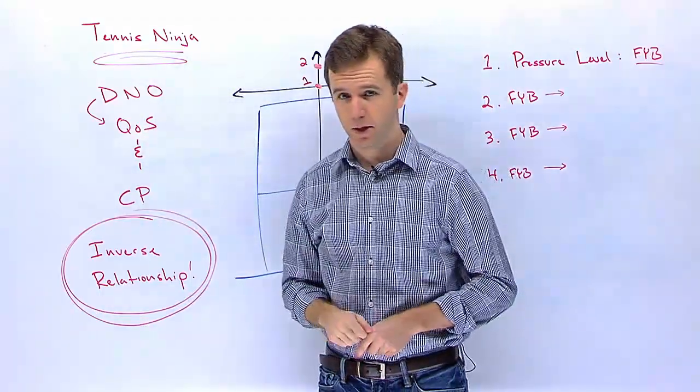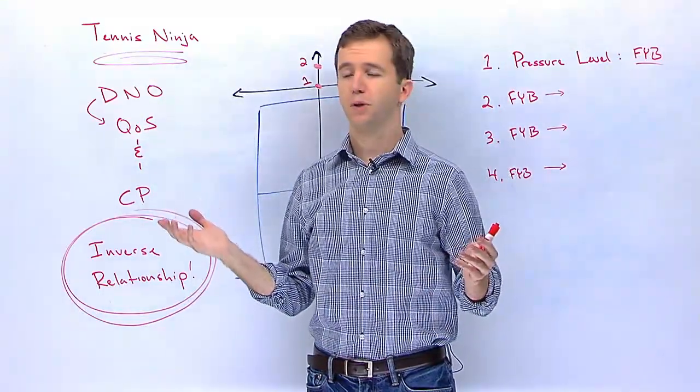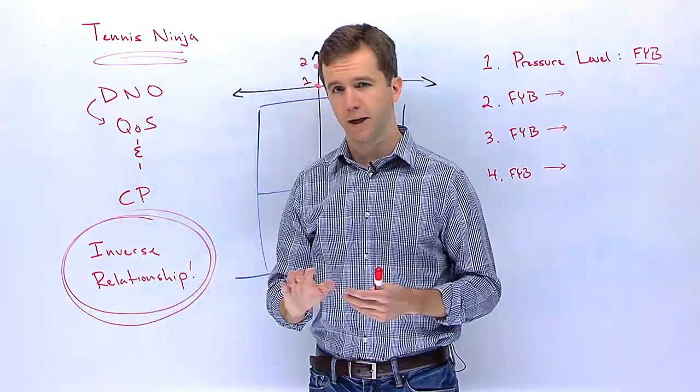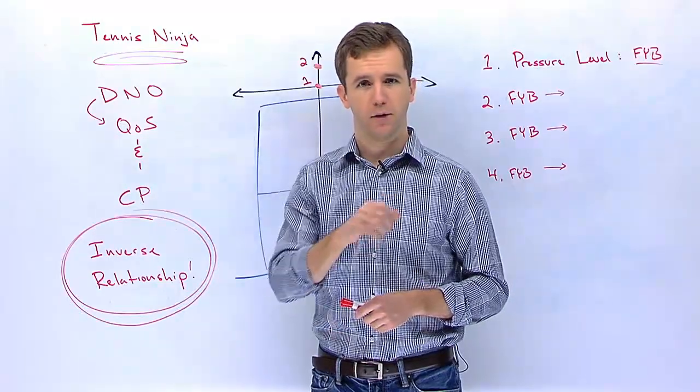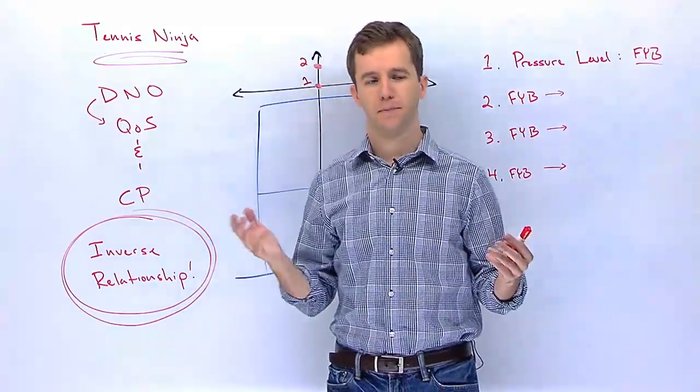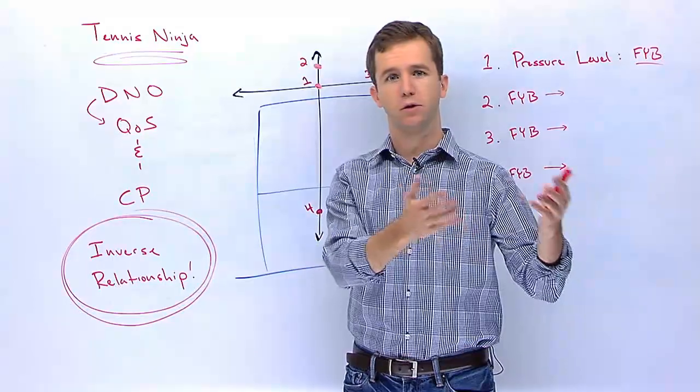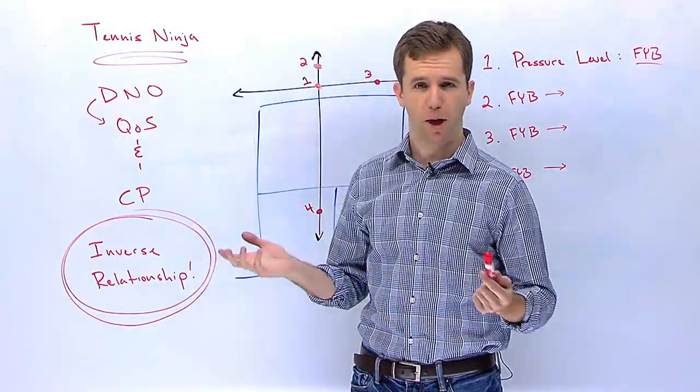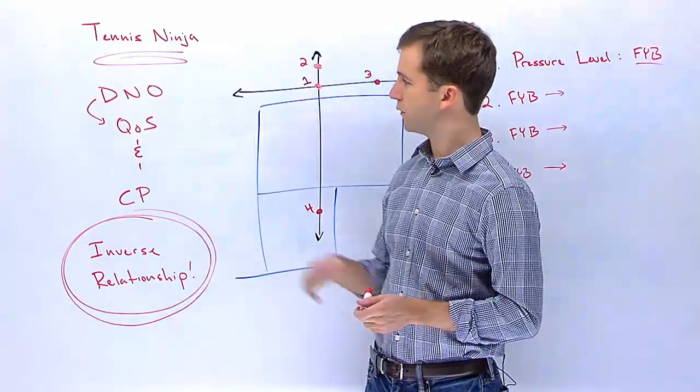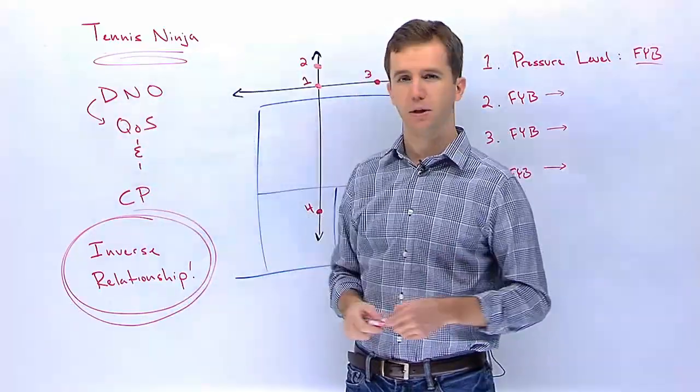So basically, that's pretty straightforward. If you're in a cross court rally, forehand to forehand, you say, is my forehand better than my opponent's forehand? Or is my opponent's forehand better than my forehand? And if my opponent's forehand is better than mine, it's probably not going to be a very good situation for me. I'm probably going to lose most of those points. So from that perspective, I would be on defense.